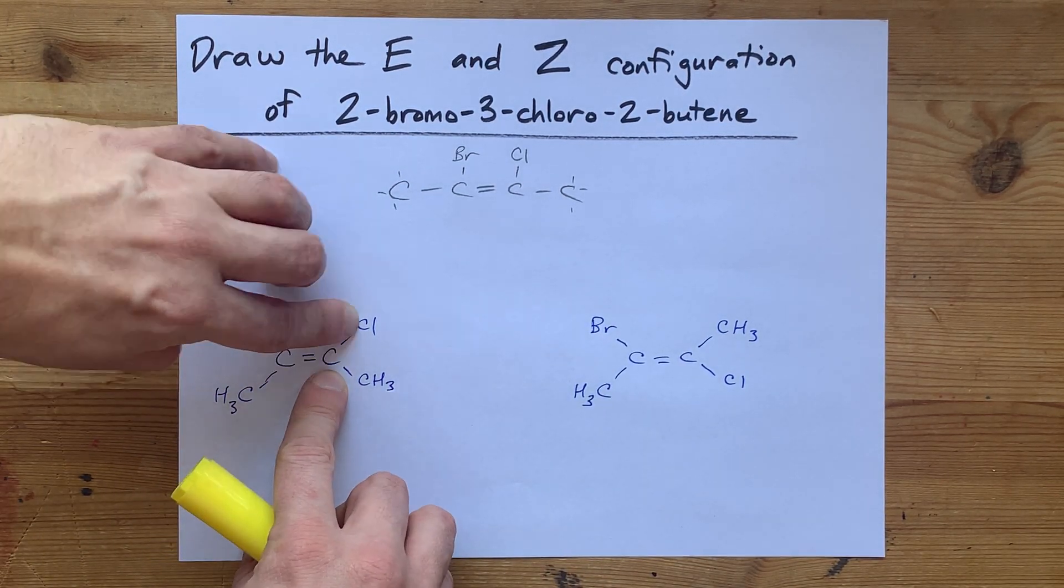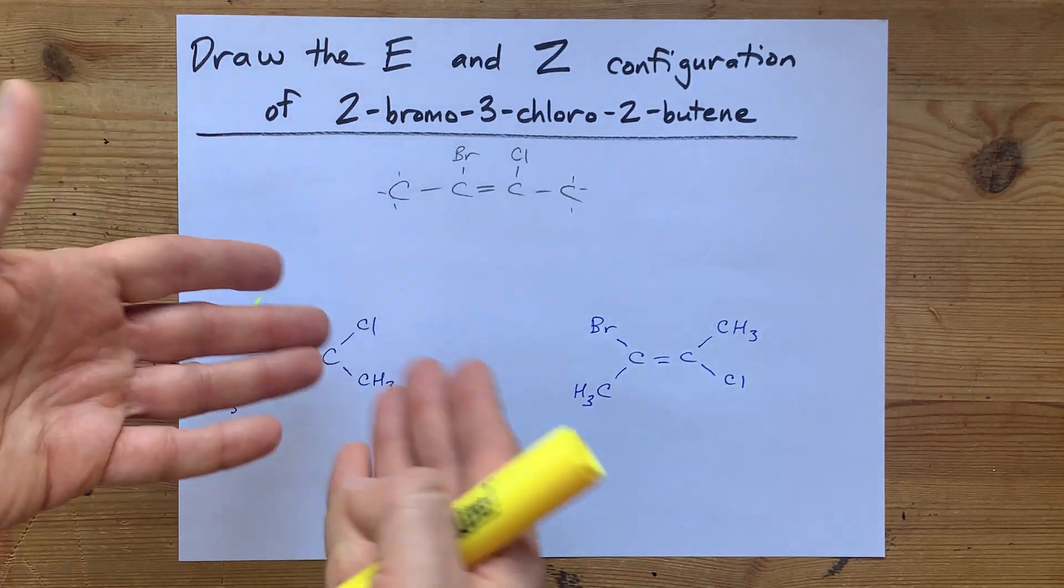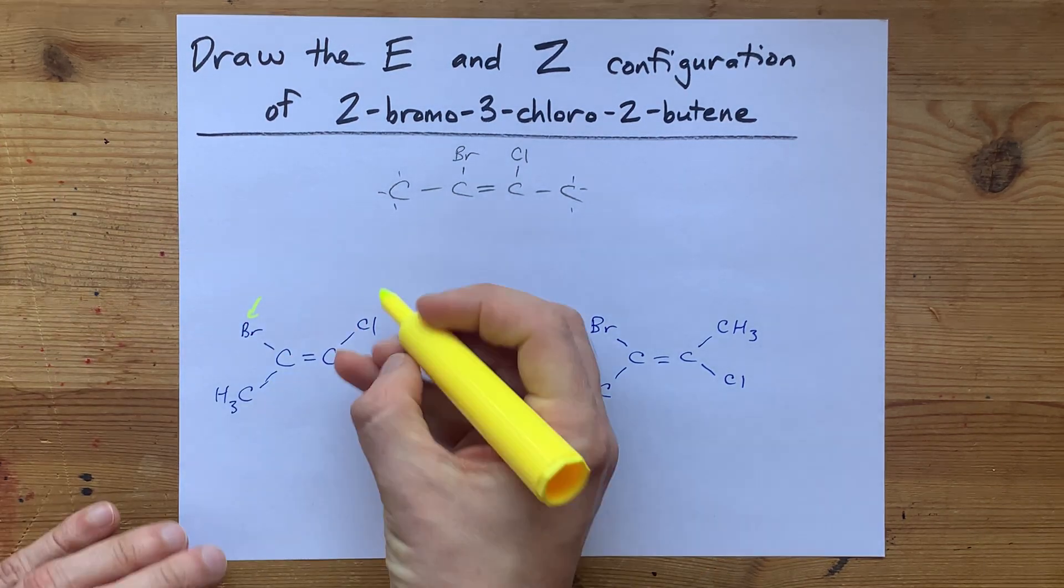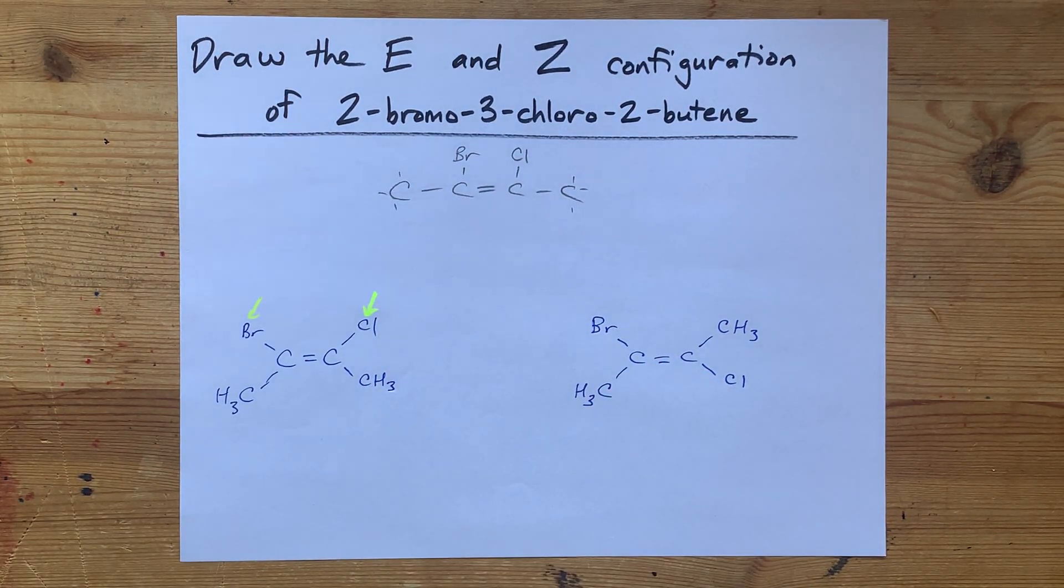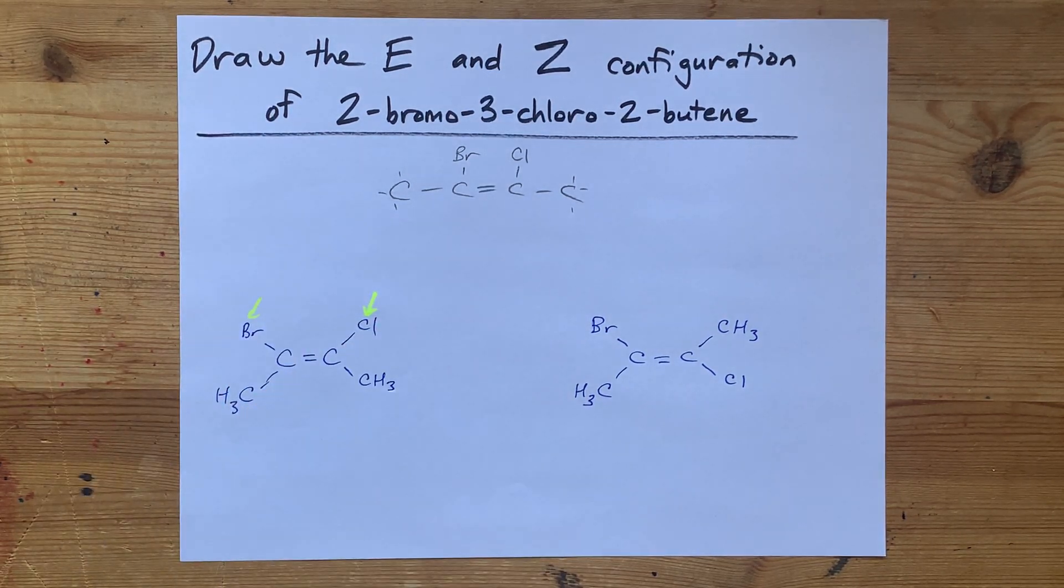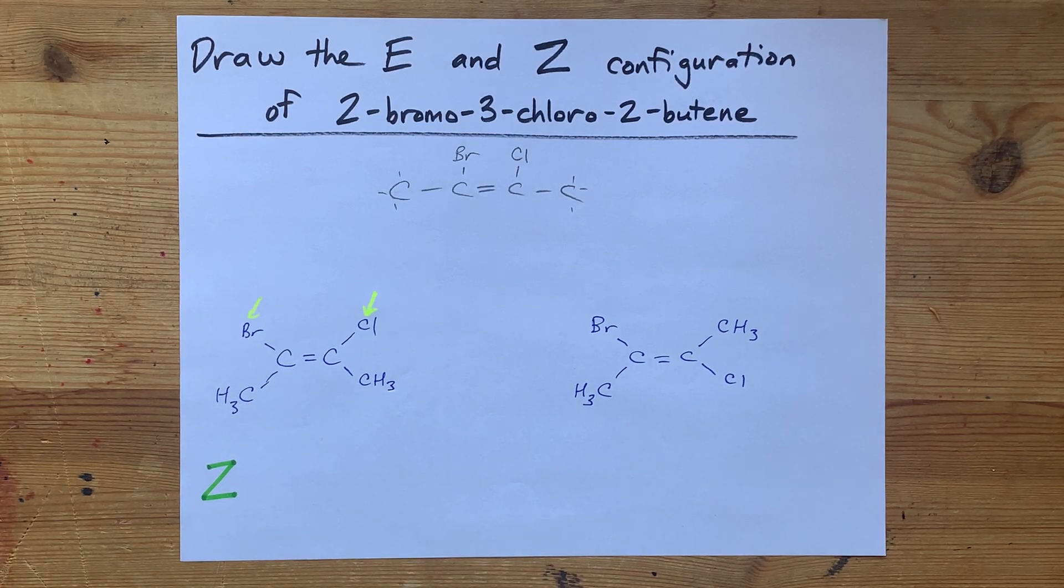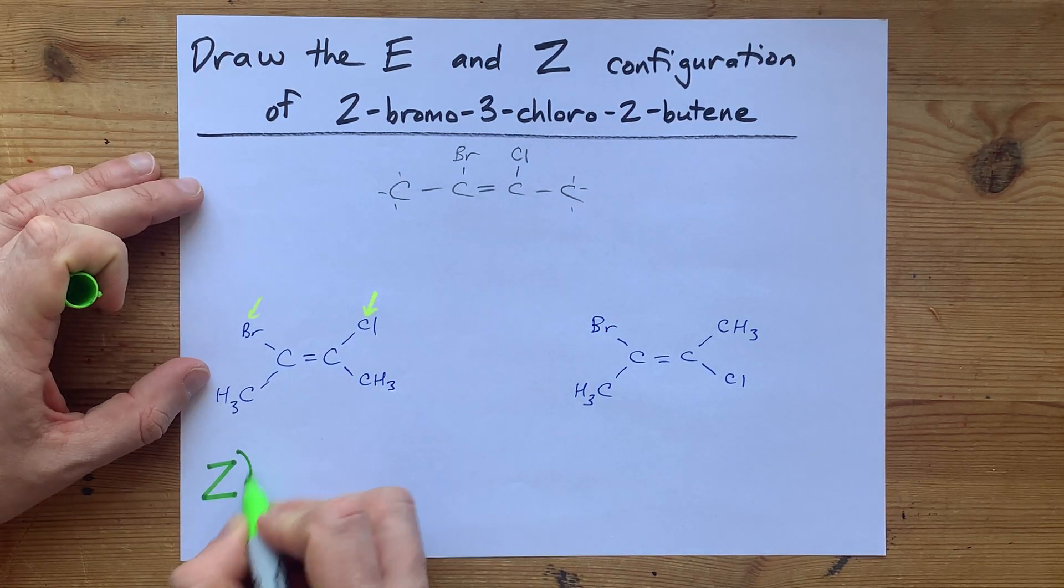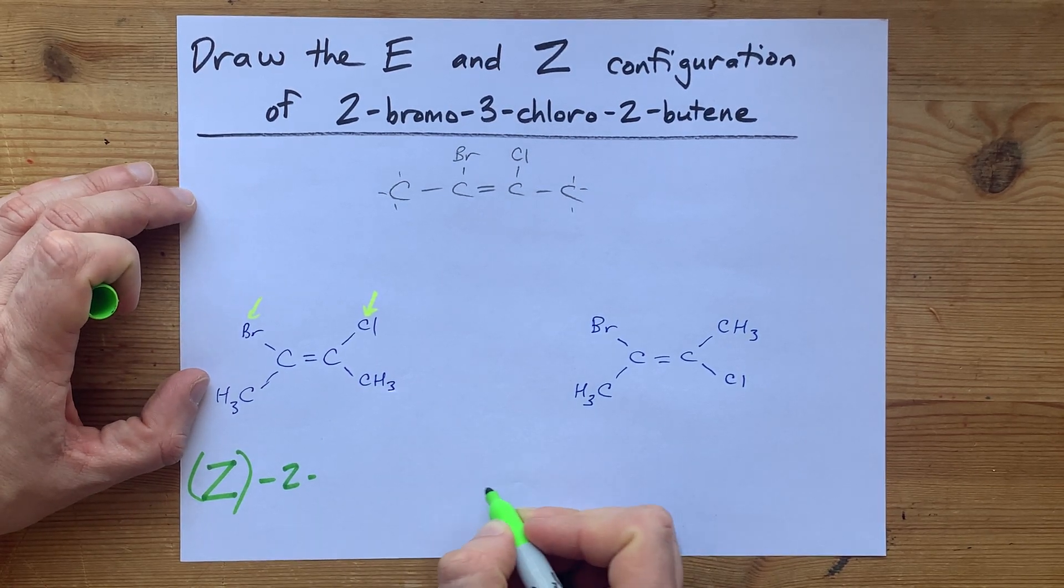We'll go to the other branch point, chlorine versus carbon. Those are different. So we can stop here and be like, oh, chlorine has the higher atomic mass. So it's the higher priority group. If the higher priority groups are on the same side of the molecule, you have the Z isomer.